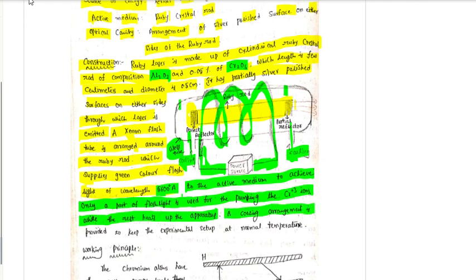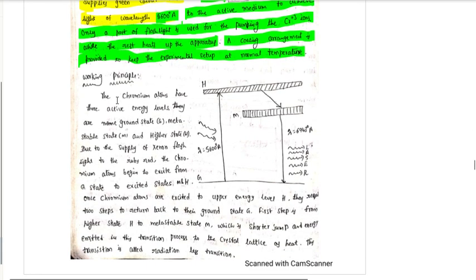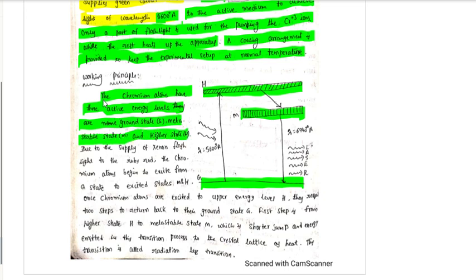A cooling arrangement is provided to keep the experimental setup at normal temperature. Now this is the working principle. We have already said that the Ruby Laser has three energy levels. The chromium atoms have three active energy levels.